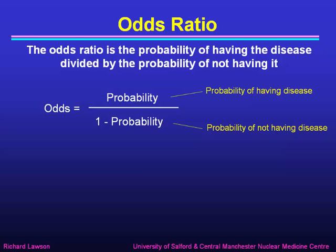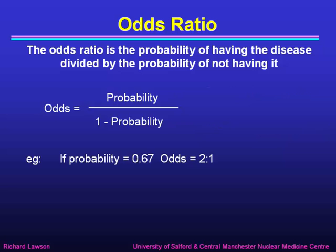To complete the picture, I need to define something else: the odds ratio. The odds ratio is the probability of having the disease divided by the probability of not having the disease — so it's probability over 1 minus the probability. If you're a gambling person, odds will already be familiar to you. As scientists, we tend to talk about probabilities as percent, but odds are the same thing expressed in betting terms.